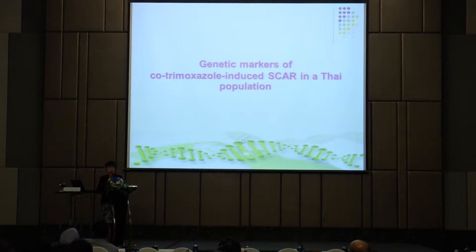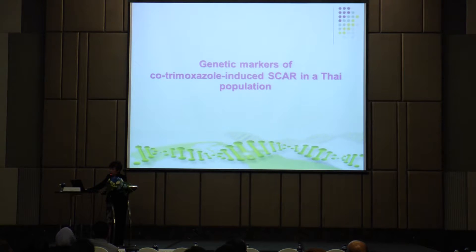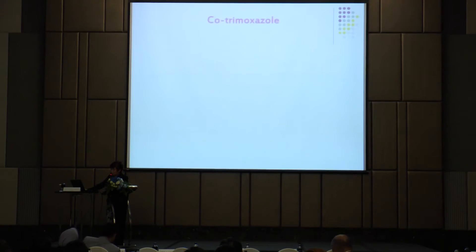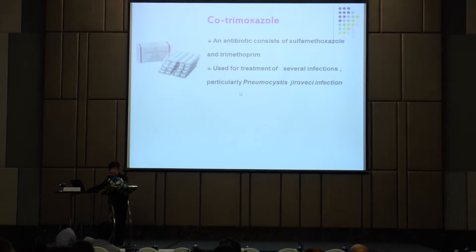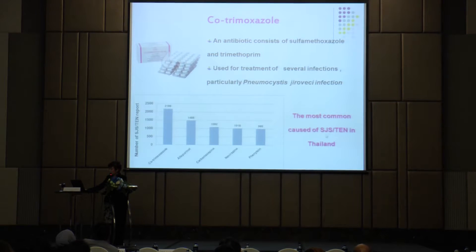Some may wonder about other drug-induced Stevens-Johnson syndrome, such as cotrimoxazole, which has the highest prevalence in Thailand. Near the end of last year, we published one of our works on cotrimoxazole-induced Stevens-Johnson syndrome. As you may know, the drug cotrimoxazole consists of sulfamethoxazole and trimethoprim. This drug in the past was used for several infections, but nowadays, because of its severe cutaneous adverse drug reaction, the use of this drug is now quite limited to certain diseases. This was the most common cause of SJS and TEN in Thailand in the past.